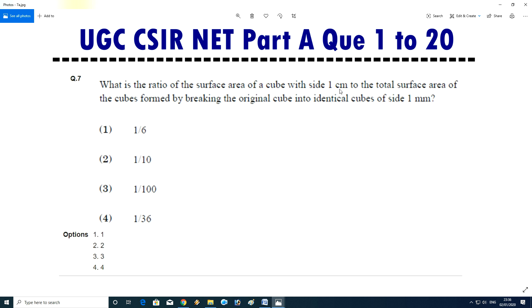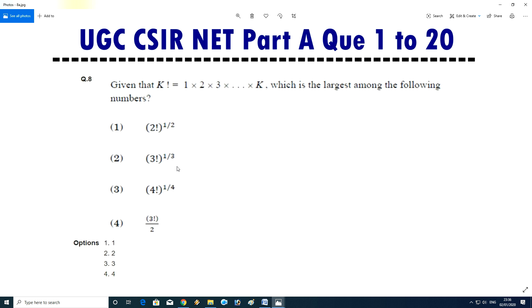Question number seven: what is the ratio of the surface area of a cube with side one centimeter to the total surface area of a cube formed by breaking the original cube into identical cubes of side one millimeter? Answer is one divided by 10 or one by 10. Question number eight: given that K equals 1 times 2 times 3 times up to K, which is the largest among the following numbers? Answer is four.